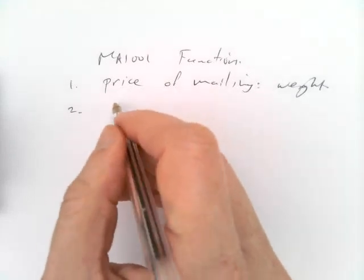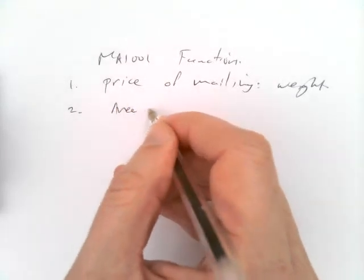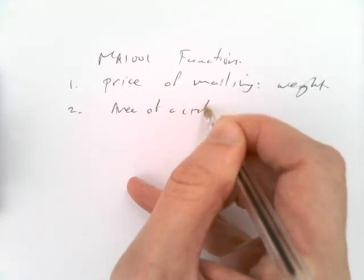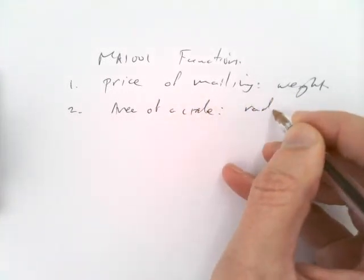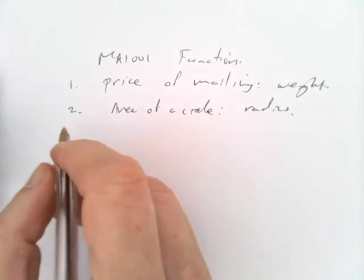Another example is more mathematical. It's the area of a circle. A circle's area is a function of its radius. Once you know the radius, you know the area.